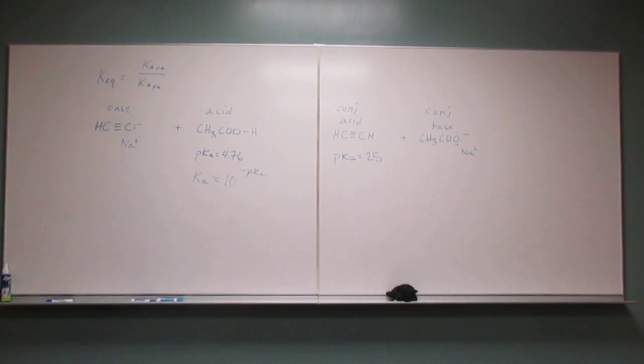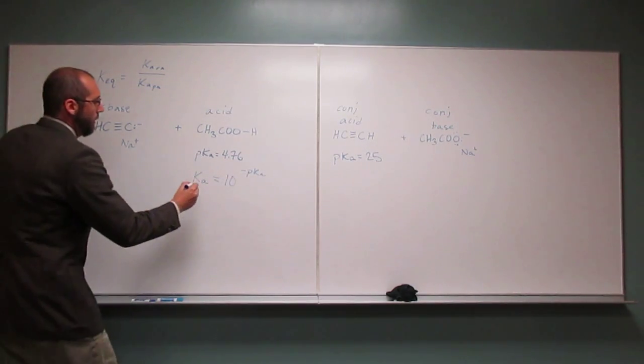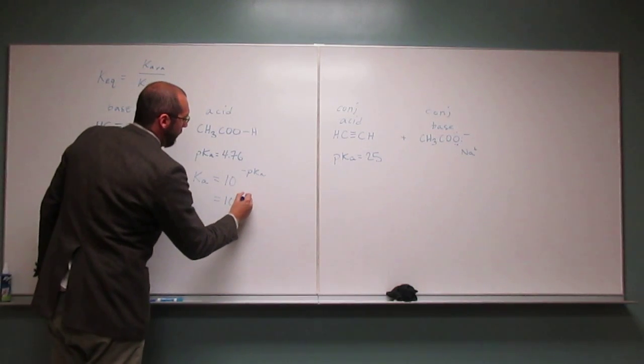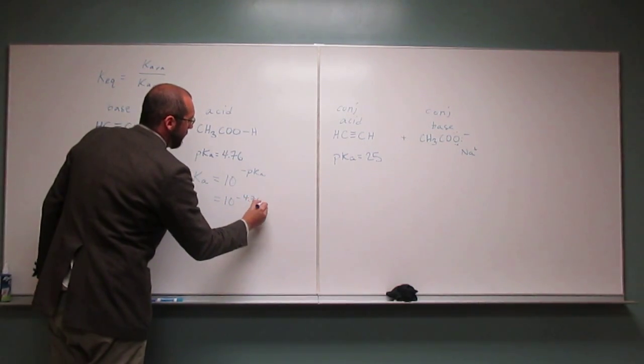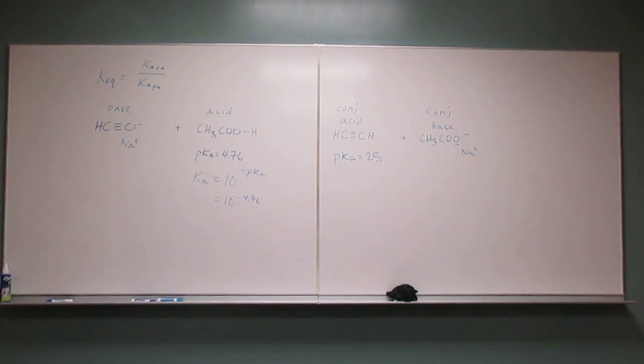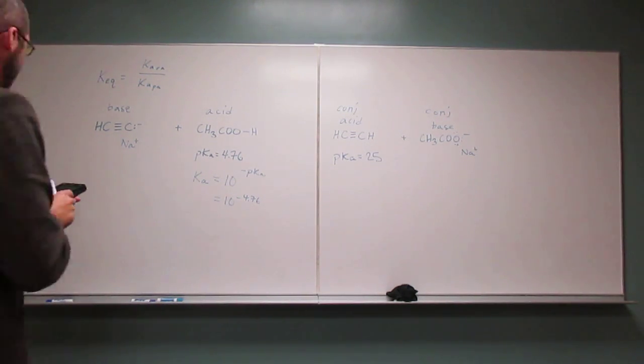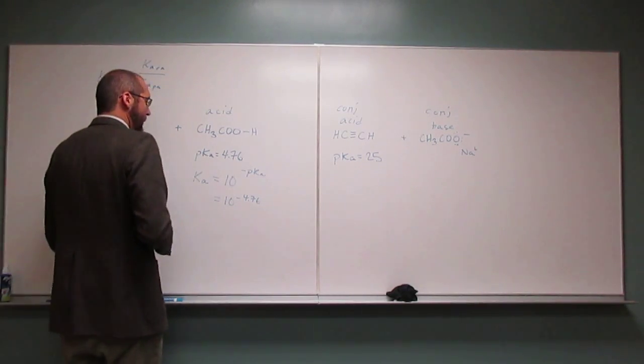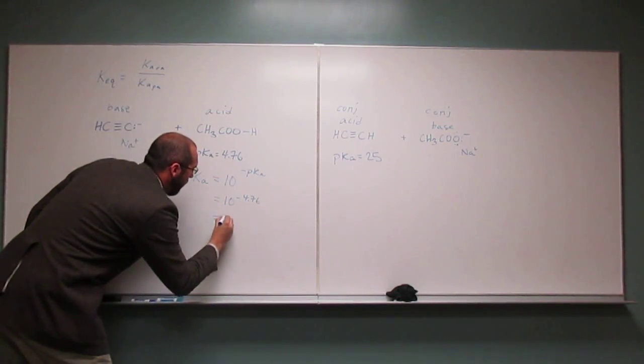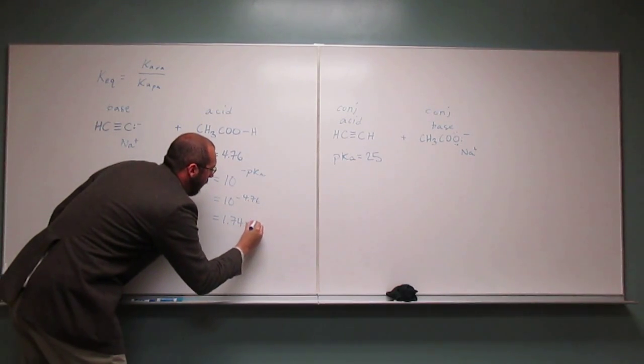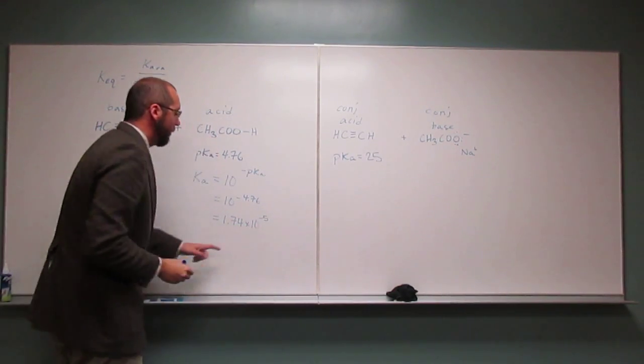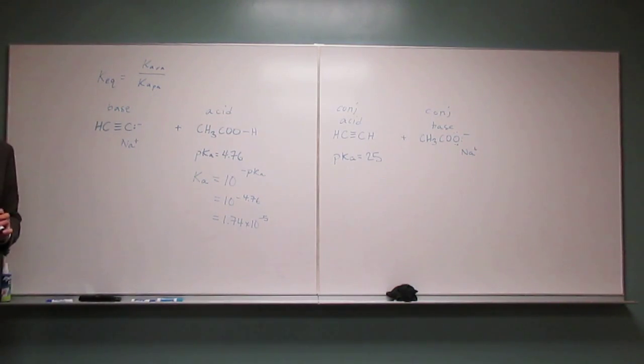So 10 to the negative 4.76, let's do that in our calculators here. And I get 1.74 times 10 to the negative 5. There's no units here. Did you get something like that? Wonderful.